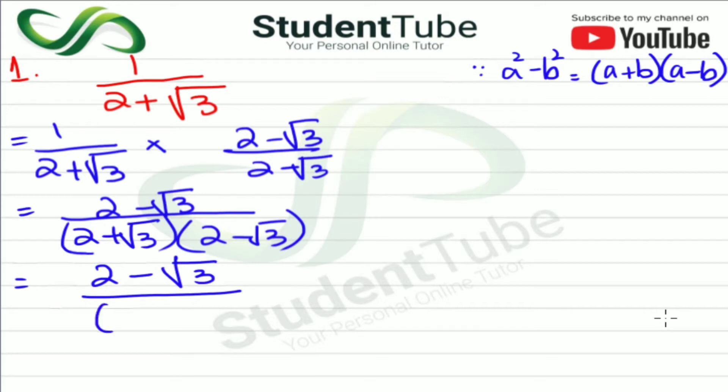Here we will have 2 minus under root 3. The 2 is a and under root 3 is b, with the plus sign. So, 2 will be squared and then minus b squared. Then under root 3 will be squared.